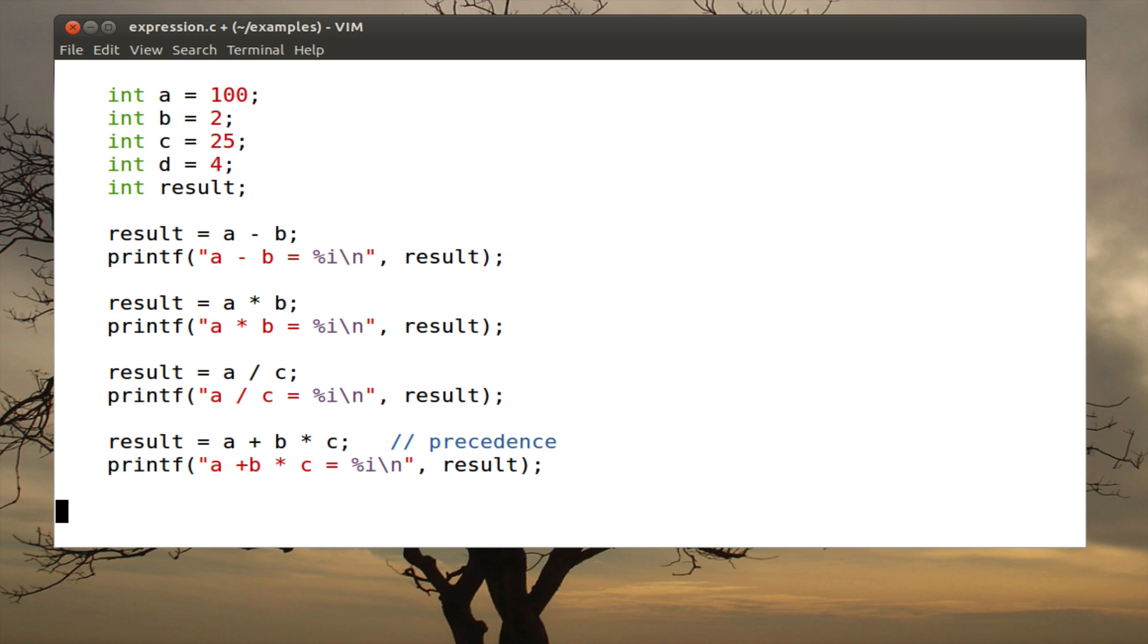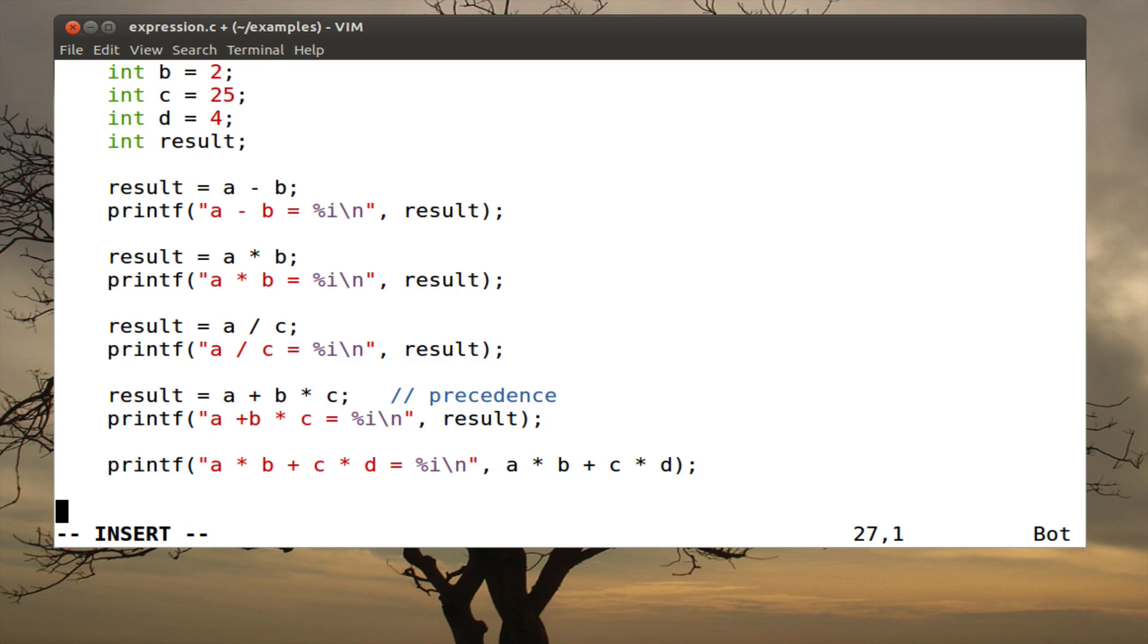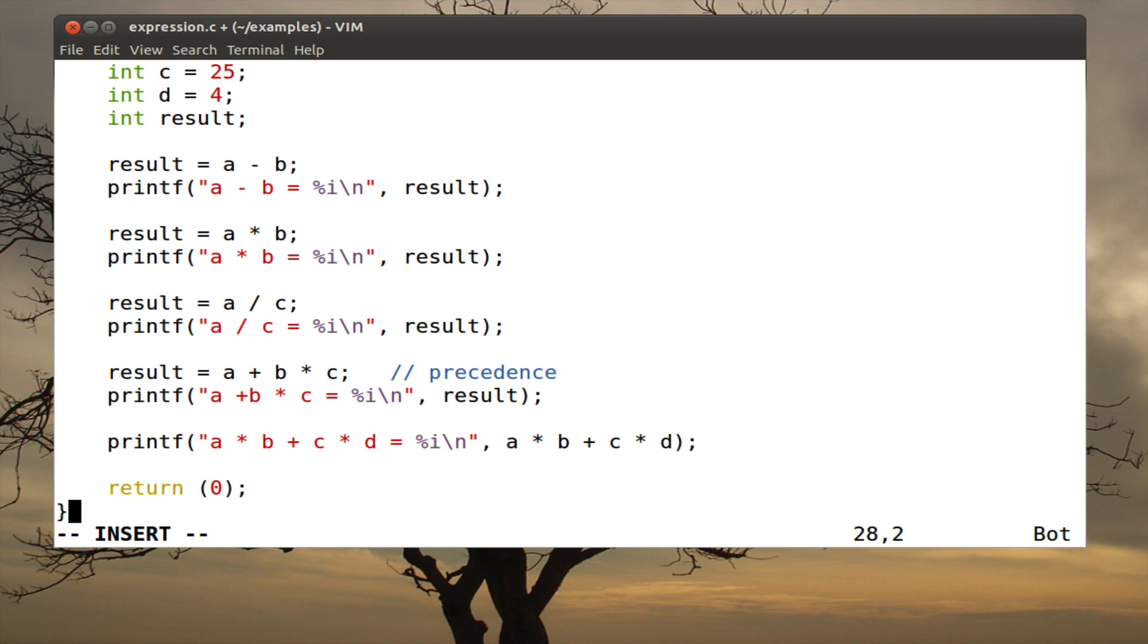So let's do one more calculation. Let's say, so one of the things we can do is we can just have an expression and feed it right to printf. So we could do this type of an expression. And then we'll put the expression right here. And finally, we need to return zero from the main function.